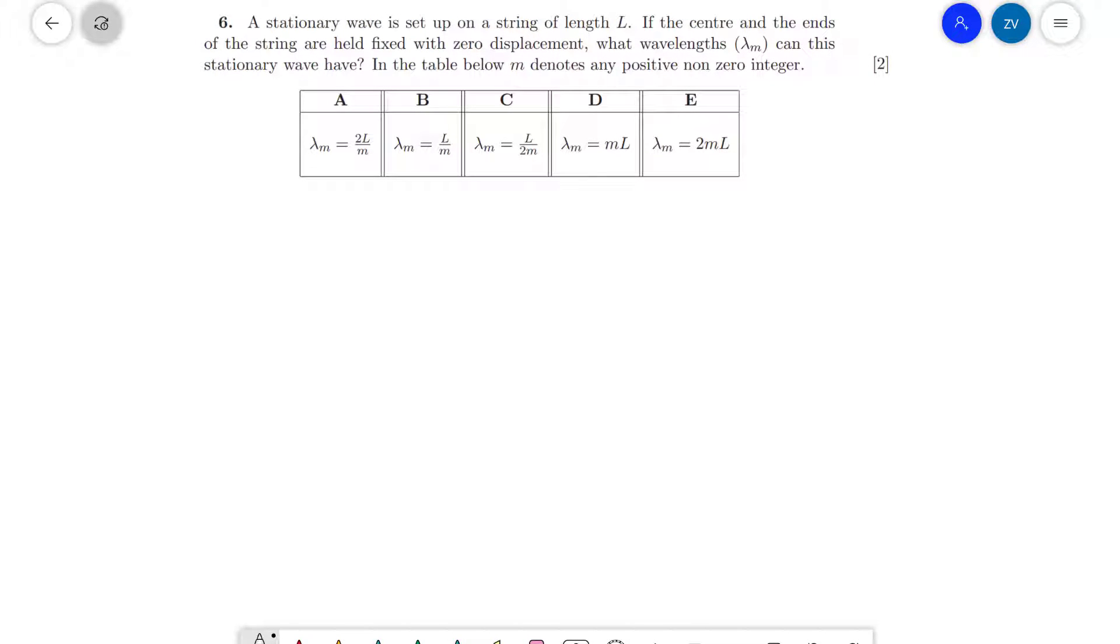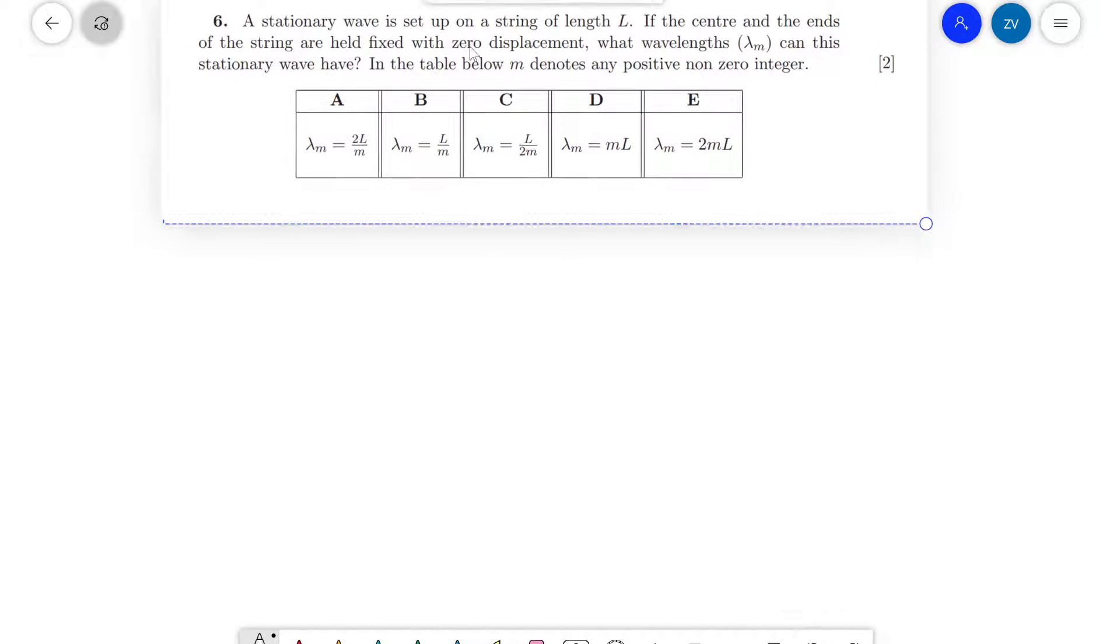We have a stationary wave set up on a string of length L. The center and the ends of the string are held fixed. This statement tells us that these are going to be nodes, so they're going to have zero displacement.